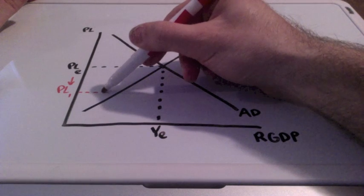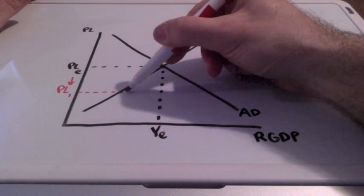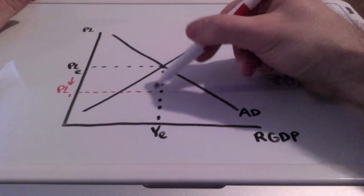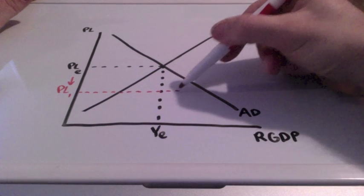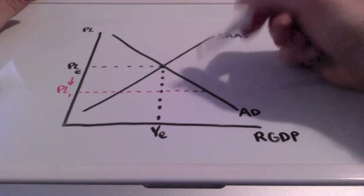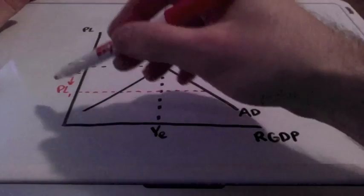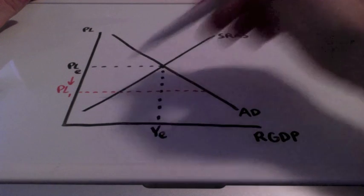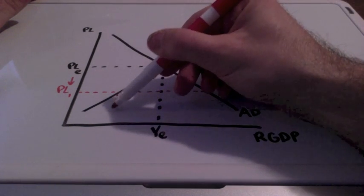Let's see where this new price level is going to intersect with our short run aggregate supply curve and our aggregate demand curve. As the price level intersects with our short run aggregate supply curve.